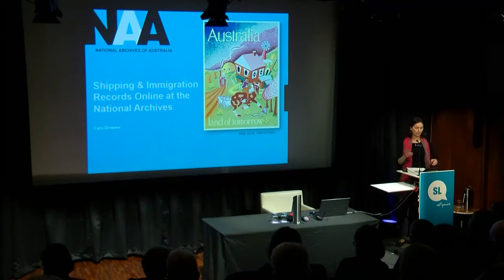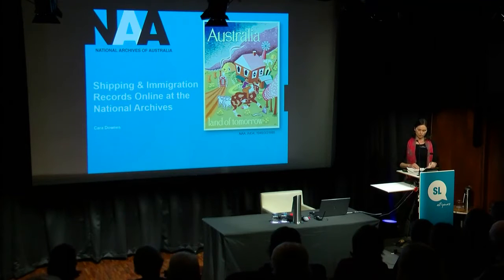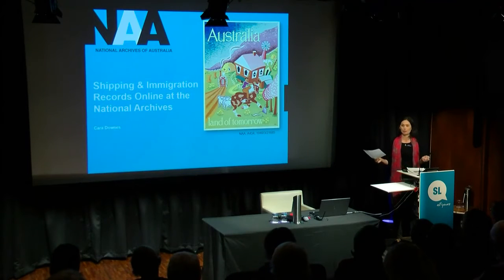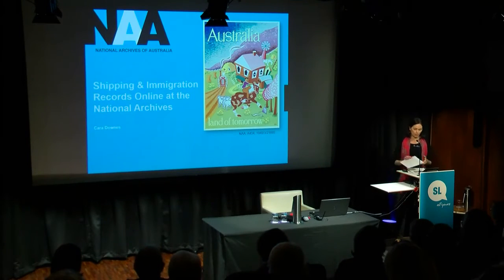Good morning everyone. Today I'm going to be giving you an overview of the main types of records held in the National Archives collection relating to passenger arrivals and how you can find and access them. You will have been given a one-page cheat sheet from me. This can be used as a guide to help you remember what I've spoken about today, because it can be a little bit confusing, but I'll do my best to make it straightforward.